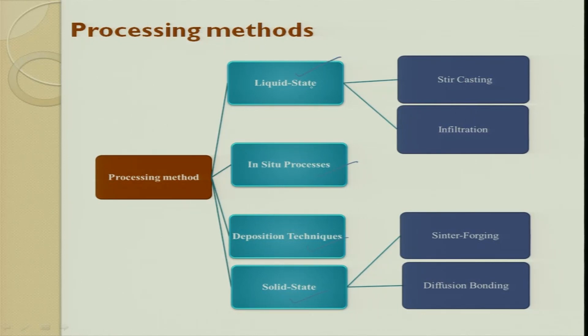In solid state processing, for a simple example, you take a metal foil — say 10 metal foil layers — and in between the two foil layers you keep some reinforcement. This reinforcement can be a metal reinforcement, carbon fiber, or glass fiber. You stack them all in the required orientation, then apply pressure and temperature so the metal melts and diffuses into the reinforcement. This includes sintering, forging, and diffusion bonding.